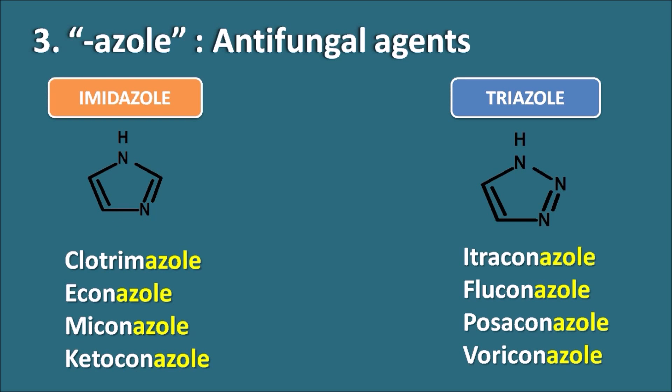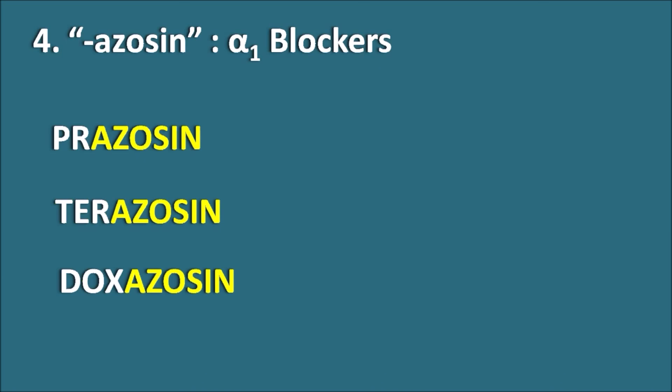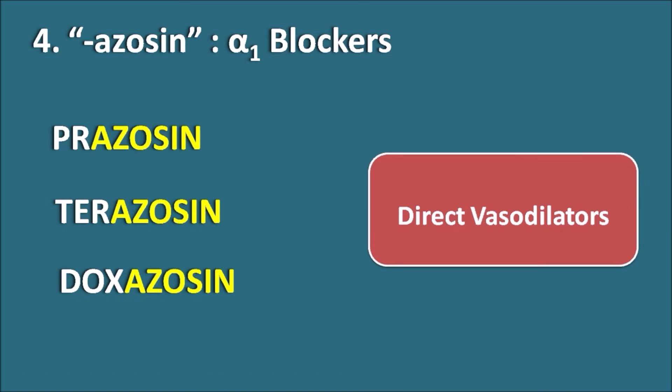Fourth, the suffix '-azosin' indicates alpha-1 blockers. Drugs like Prazosin, Terazosin, and Doxazosin are all alpha-1 blockers. These drugs can act as direct vasodilators and are indicated in the treatment of hypertension.